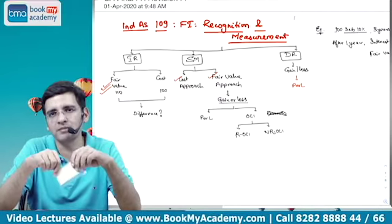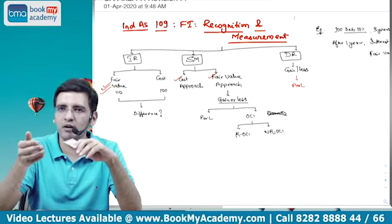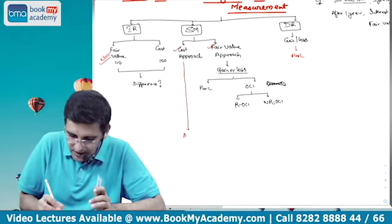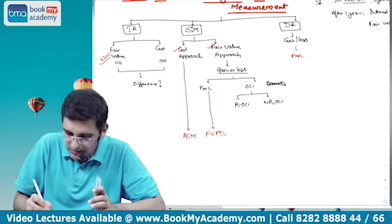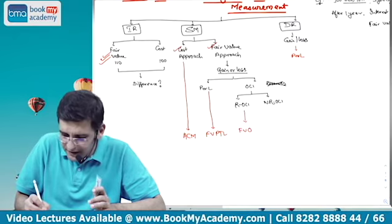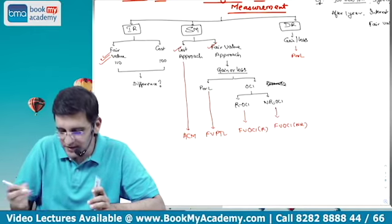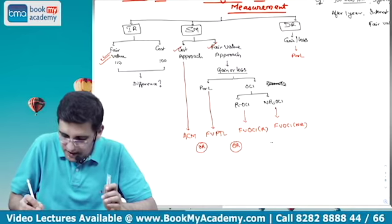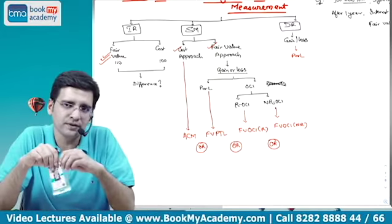So for subsequent measurement, it could be either cost approach or fair value approach. The year-end or reporting date treatment is what changes. Either the asset continues at cost, or is measured at fair value with gain or loss going to P&L or OCI. These particular methods in this standard are: ACM — Amortized Cost Method; FVTPL — Fair Value Through Profit or Loss; and FVTOCI — Fair Value Through Other Comprehensive Income, which is either reclassifiable or non-reclassifiable. The question is which of these to choose — this is not purely up to you; it depends on certain rules and logic.